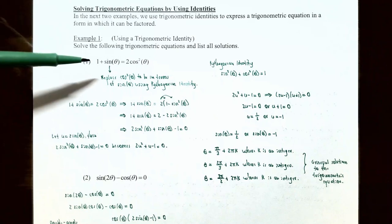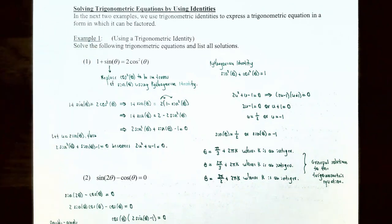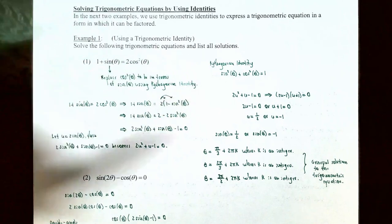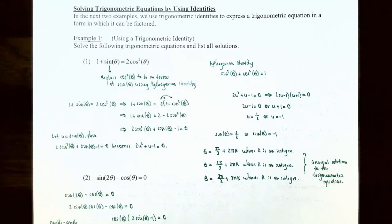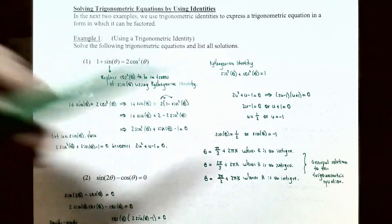Notice you have two different trigonometric functions: the sine function and the cosine function. The cosine function is squared, but the sine function is not. Since the sine function is being raised to the first power, we're going to replace the cosine squared function to be in terms of sine squared. Using the Pythagorean identity — sine squared of theta plus cosine squared of theta equals one — cosine squared of theta equals 1 minus sine squared of theta. So let's replace the right side: 2 times cosine squared of theta with 2 times the quantity 1 minus sine squared of theta.